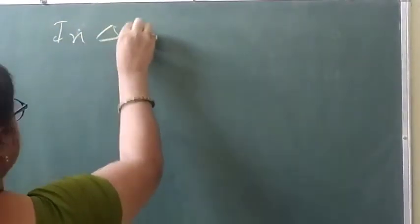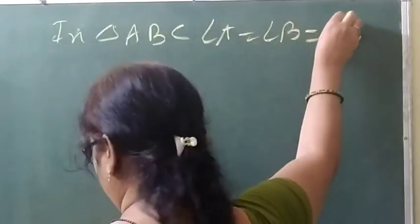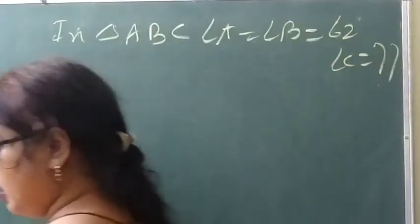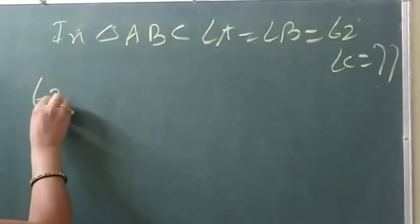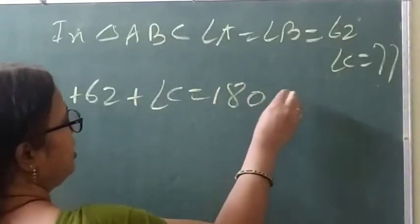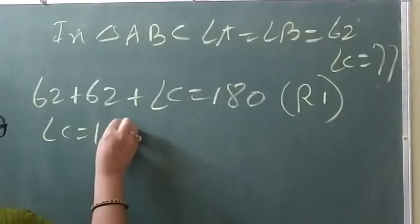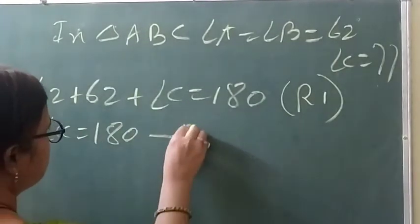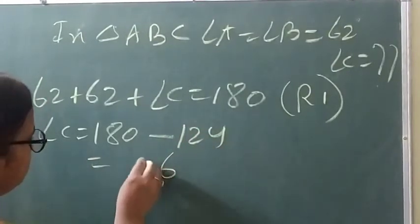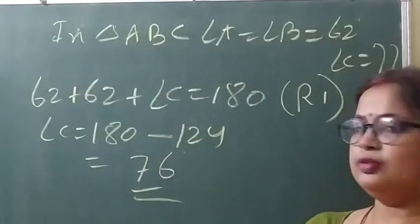In triangle ABC, angle A is equal to angle B, which is 60 degrees. You have to find angle C. So 60 plus 60 plus angle C equals 180 — Reason 1. Then angle C equals 180 minus 124, which is 56 degrees.